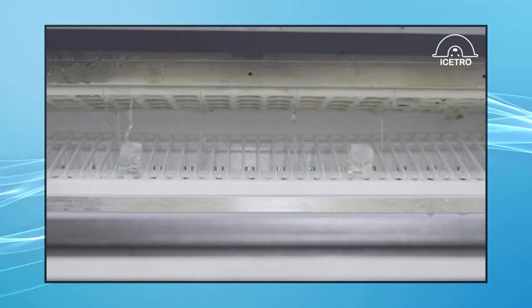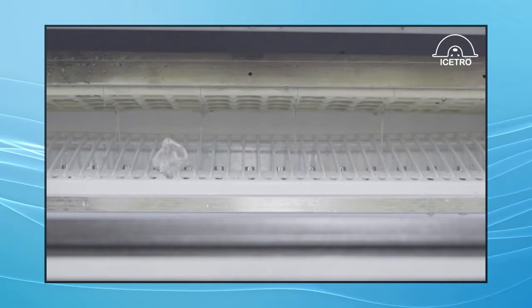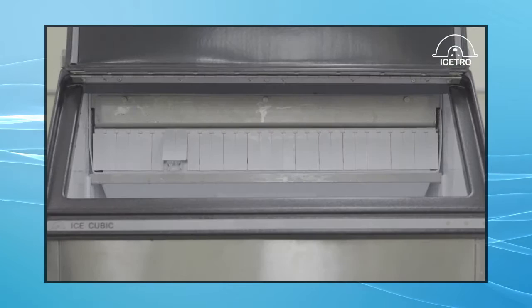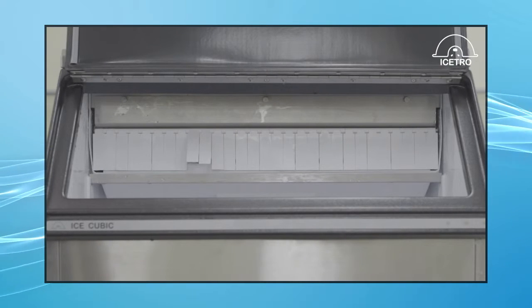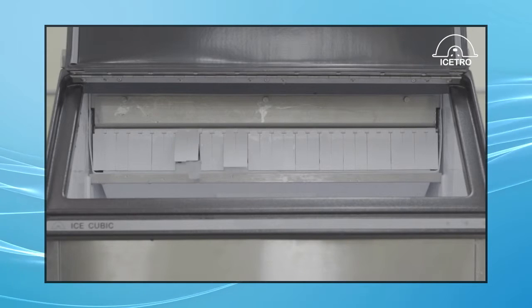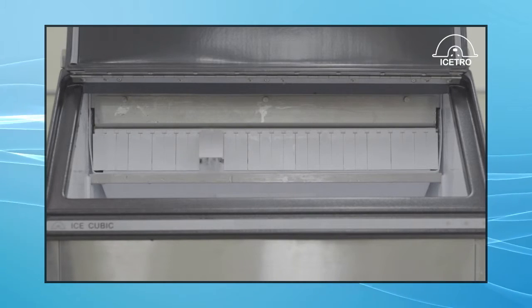And once the evaporator thermostat reaches 55 to 64 degrees Fahrenheit, the defrost mode is terminated. The freeze cycle starts over again and this sequence repeats itself until the bin sensor senses a full bin and the ice maker will shut down.